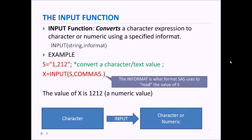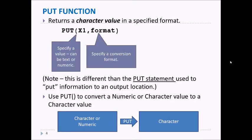The PUT function returns a character value in a specific format. In this syntax we enter a value X1 and then convert it using some specified format. Note that this is different than the PUT statement used to put information to an output location. So we use PUT to convert a numeric or character value to a character value using some specified conversion format.